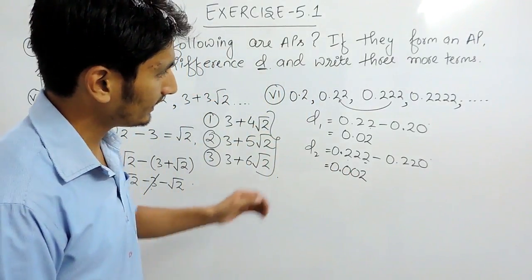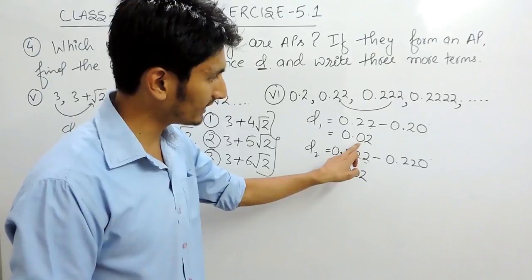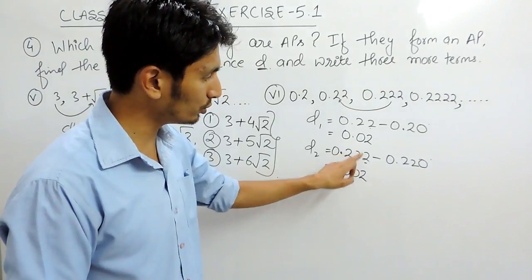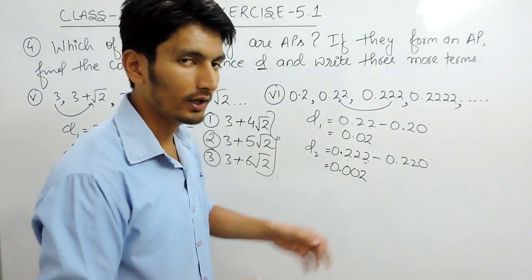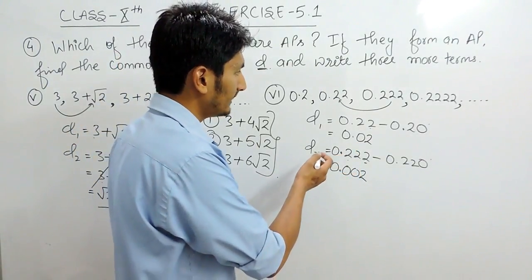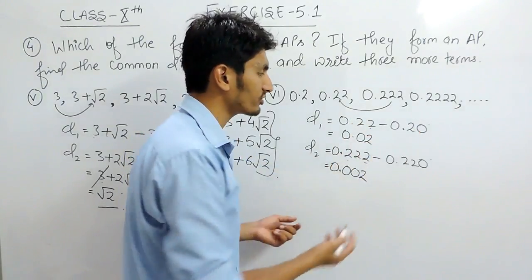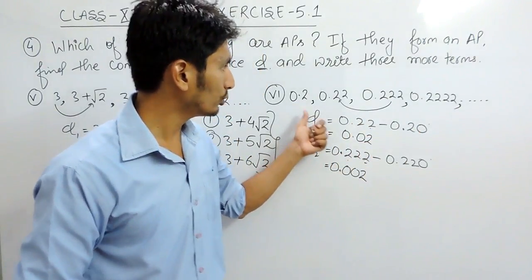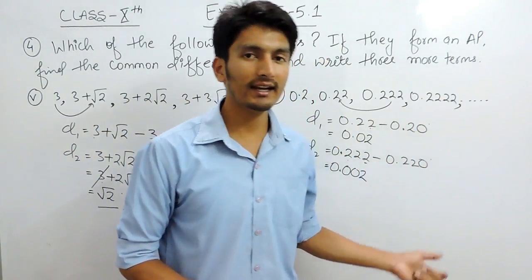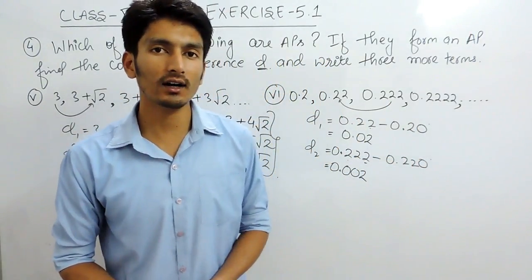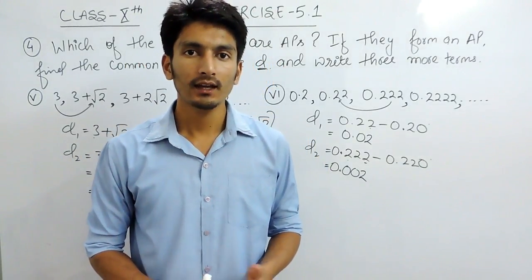Clearly the common differences are not the same — the first is 0.02 and the second is 0.002. That means we are not adding a constant term, so this is not an example of arithmetic progression.